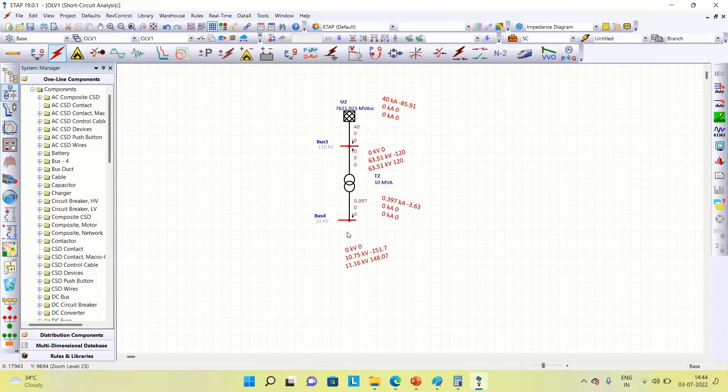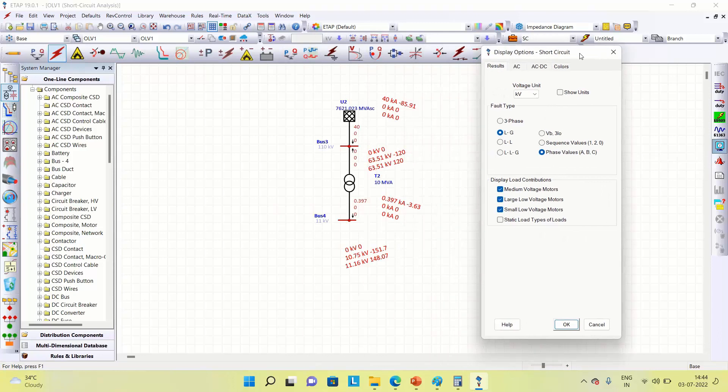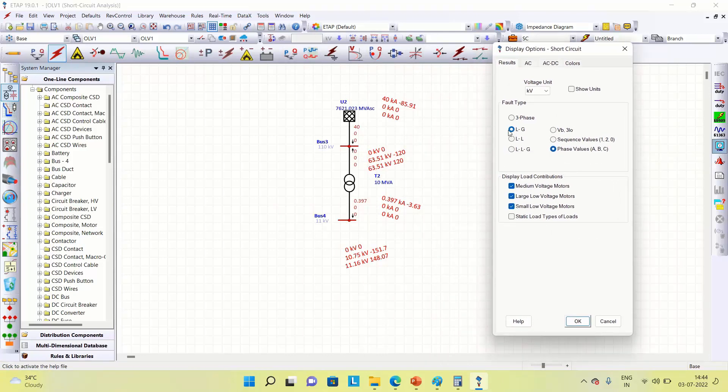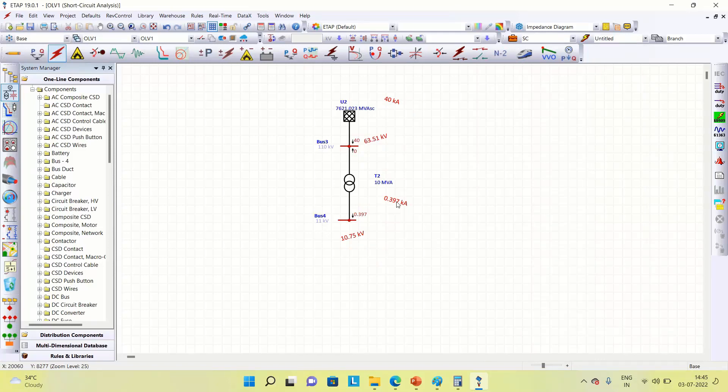Now we can see the fault current at LV side is 0.397 kA. Let us see what kind of fault this is - line to ground fault, okay.